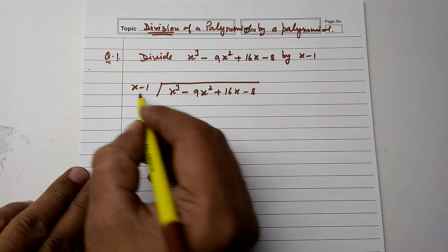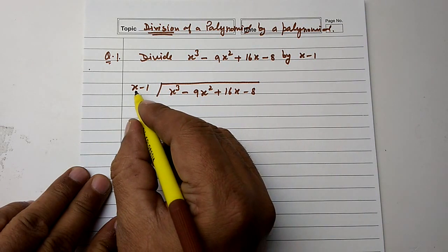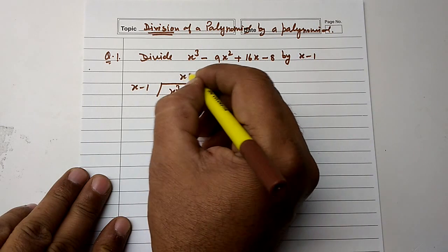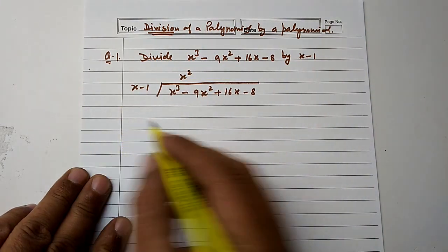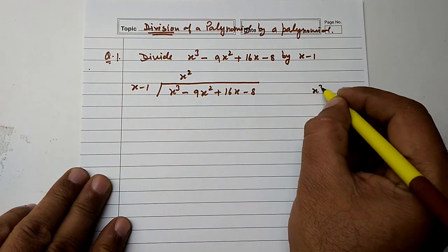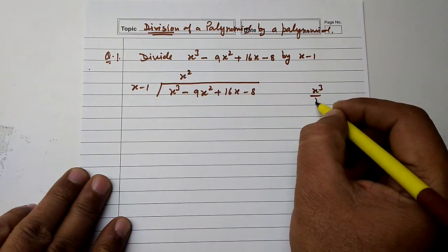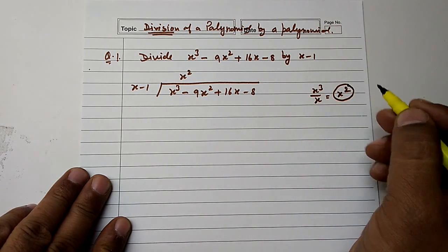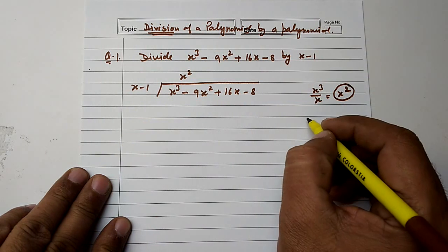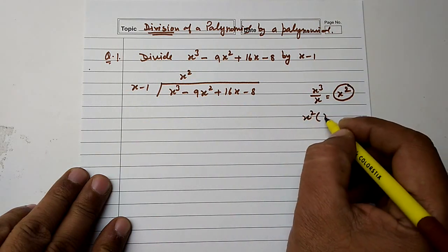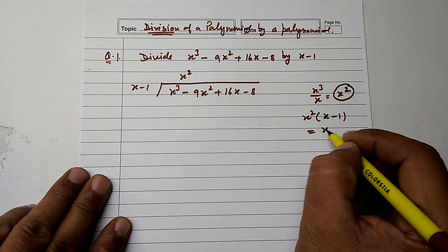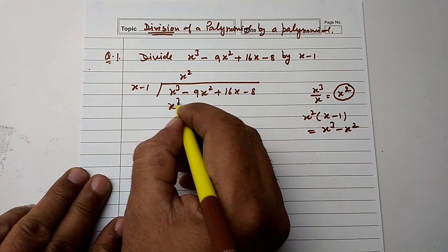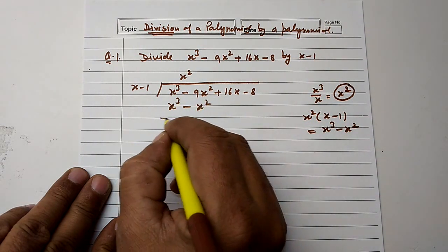Now we divide x cubed by x. x cubed divided by x is equal to x squared. So x squared is the first term of the quotient. This gives us x cubed minus x squared.